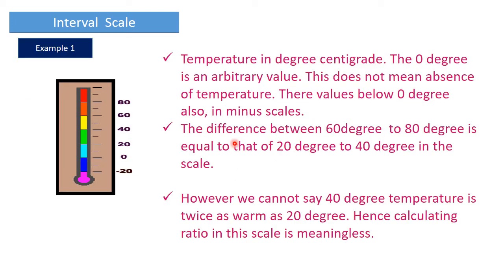A classic example of interval scale is temperature measured in degrees centigrade. The value of zero doesn't mean the absence of temperature, because temperatures exist below zero — minus two, minus four, minus twenty. So the presence of zero does not mean the absence of temperature. Also, the difference between 60 and 80 degrees is equal to the difference between 40 and 20 degrees — both are 20 degrees. However, we cannot say that 40 degrees is twice as warm as 20 degrees, hence calculating ratios in this scale is meaningless.